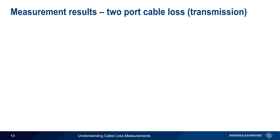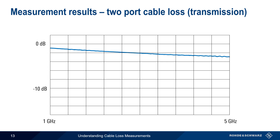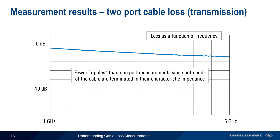Let's look at a two-port or transmission cable loss measurement using the same cable and settings that we used for the one-port measurement. We see that loss is still a function of frequency, but notice the trace has fewer ripples than the one-port measurement. This is because the cable is terminated in its characteristic impedance on both ends. Although there are many cases where attaching both ends of a cable to a VNA is not practical, two-port cable loss measurements are generally preferred over one-port cable loss measurements whenever possible.